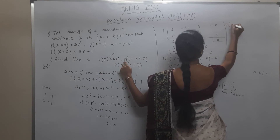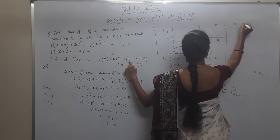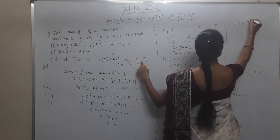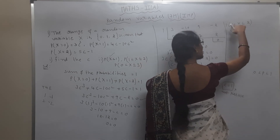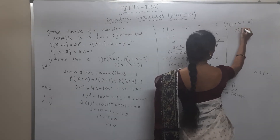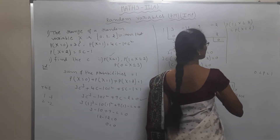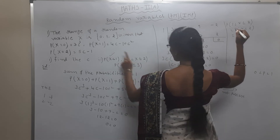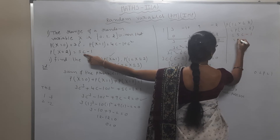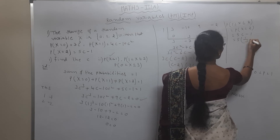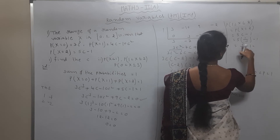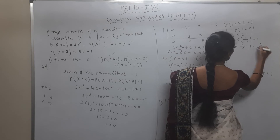Next, find P(1 < X < 2). X lies strictly between 1 and 2, so only X = 2 qualifies (as X is discrete with range {0,1,2} and X=1 is excluded). P(X = 2) = 5c - 1 = 5(1/3) - 1 = 5/3 - 1 = 2/3.